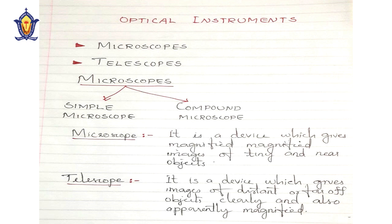Hello, dear students, hope all of you are fine and enjoying your vacation. Keep watching the video and make the topics clear. Today we are going to start the topic of optical instruments. As we all know, one of the major optical instruments is our human eye. Other optical instruments include camera lenses, microscopes, telescopes, etc. In this topic we are going to discuss the formation of images and their magnification by optical instruments such as microscopes and telescopes.